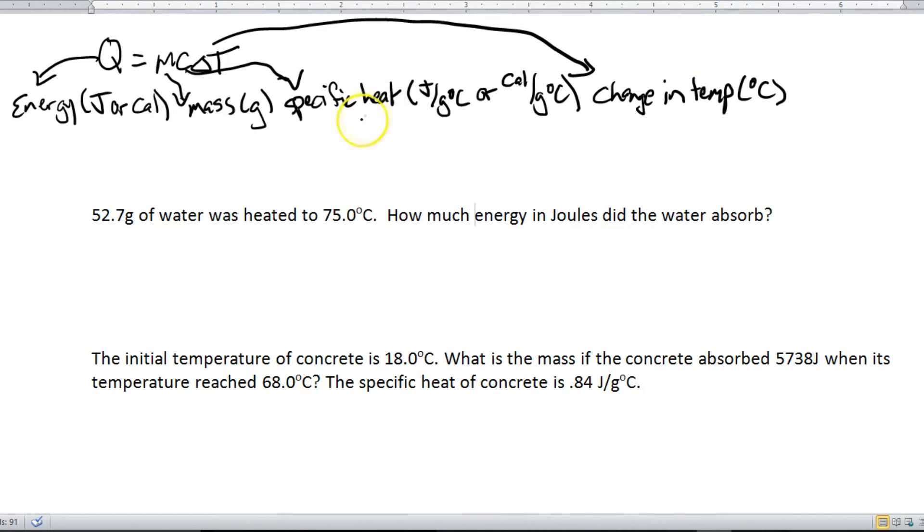Let's see how to use them. Alright, so here we go, 52.7 grams of water was heated to 75.0 degrees Celsius. How much energy in joules did the water absorb? Alright, so our equation is Q equals MC delta T. Alright, do we know Q? Well, Q is energy and that's what it's asking for, so no, we don't know that. So we've got Q equals M's mass, which is 52.7.